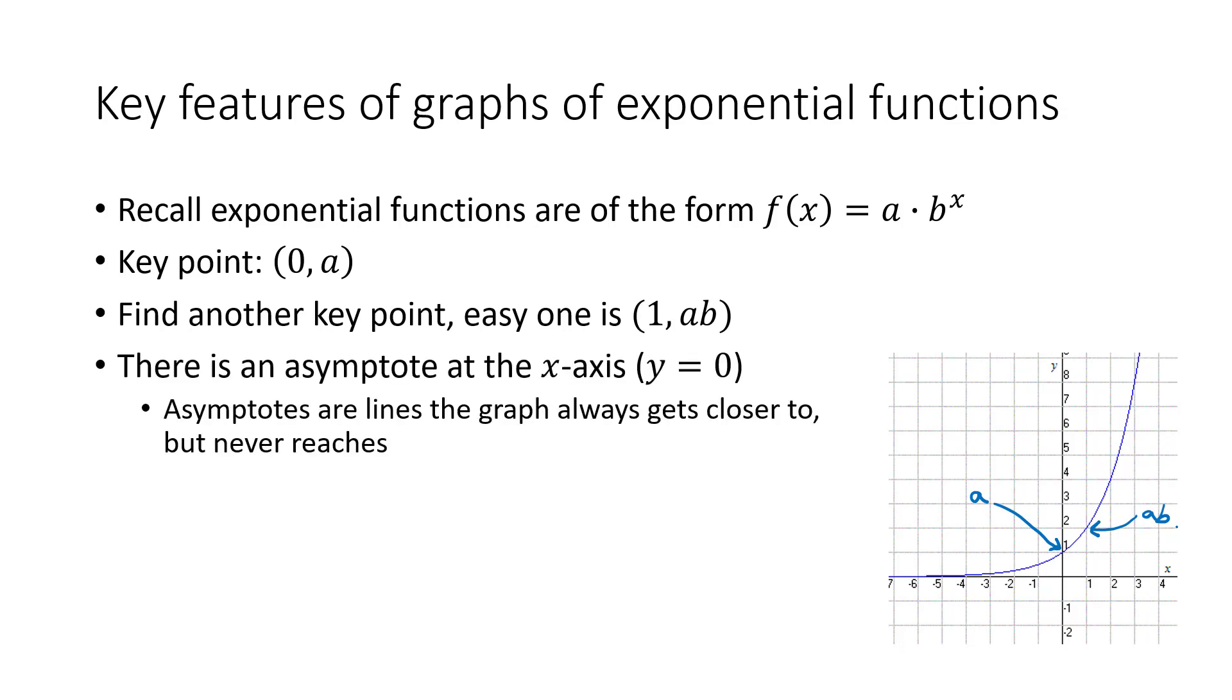Also to help us, there's what's called an asymptote on the x axis. An asymptote is a line that the graph is going to get closer and closer to, but it's never going to reach and never going to cross. So in the case of this graph, you see towards the left, the graph gets closer and closer to the x axis. And if we were to zoom in, we would find it never actually reaches the x axis. It always gets closer and then closer, but never actually arrives.